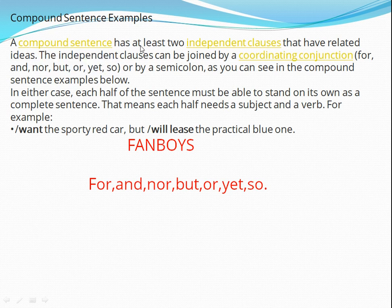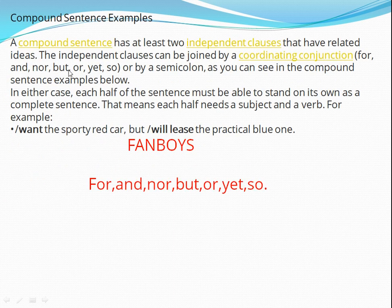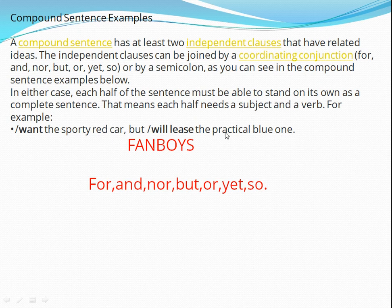A compound sentence has at least two independent clauses with related ideas, joined by a coordinating conjunction — for, and, nor, but, or, yet, so — or by a semicolon. In either case, each half of the sentence must be able to stand on its own, meaning each half needs a subject and a verb. For example: 'I want the sporty red car, but we'll lease the practical blue one.'